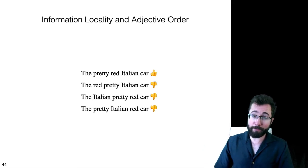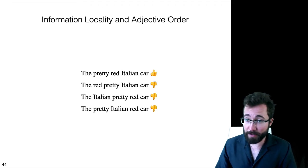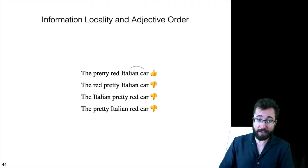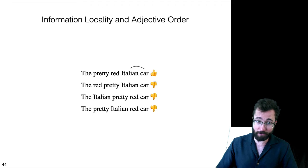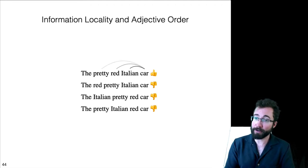The hope is that information locality can explain this because in information locality, essentially, if there is high PMI between Italian and car, there's like a very strong dependency between them and they need to be very close. Whereas, maybe red has less PMI with car, maybe pretty has even less PMI with car, corresponding to weaker attraction among them. And other languages other than English have similar ordering preferences to these.